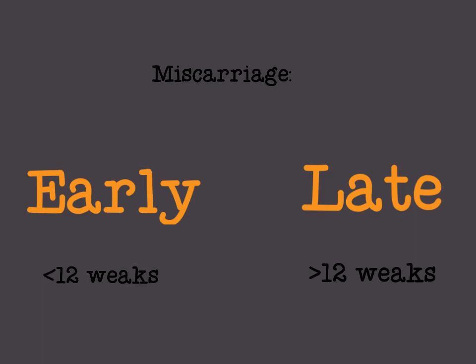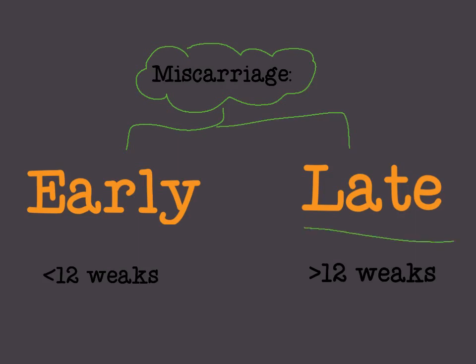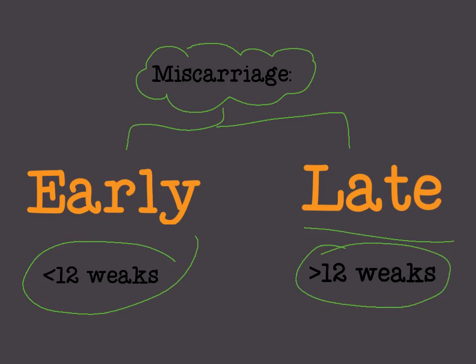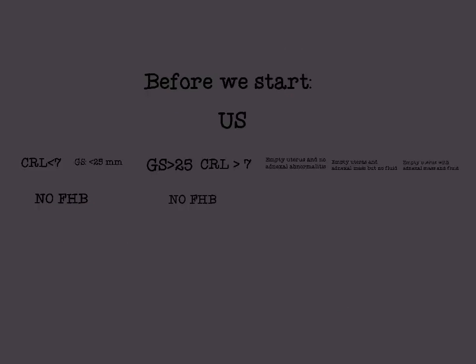Miscarriage is subdivided into early and late miscarriages. Early miscarriage is before 12 weeks — bleeding or losing the pregnancy before 12 weeks. Late miscarriage is after 12 weeks — losing the pregnancy after 12 weeks.